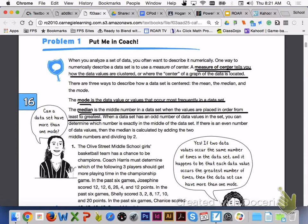The mode is the data value or values that occur most frequently in a data set. Sometimes the question is asked, can a data set have more than one mode? The answer is yes. If two data values occur the same number of times in the data set, and it happens to be that each data value occurs the greatest number of times, then the data set can have more than one mode.